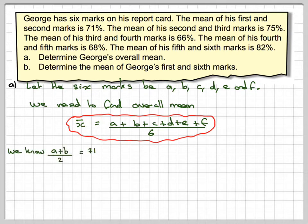We know from the question that (A+B)/2 = 71, (B+C)/2 = 75, (C+D)/2 = 66, (D+E)/2 = 68, and (E+F)/2 = 82.